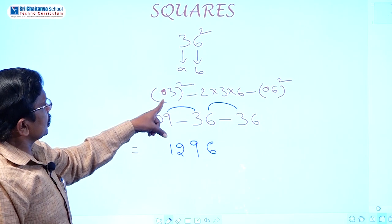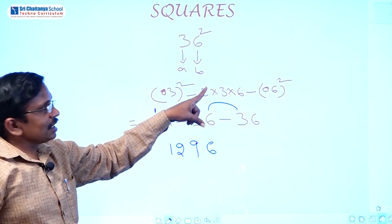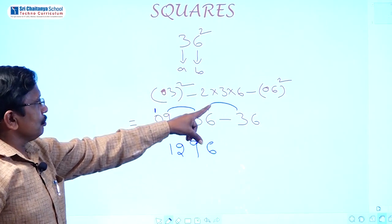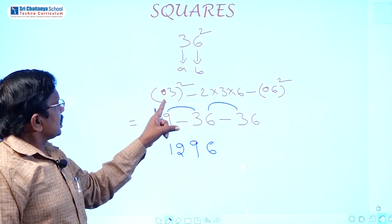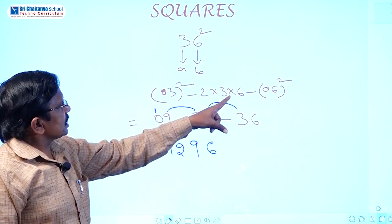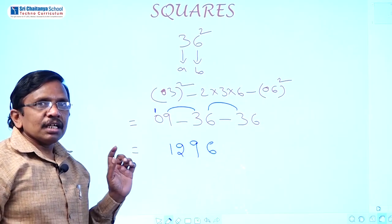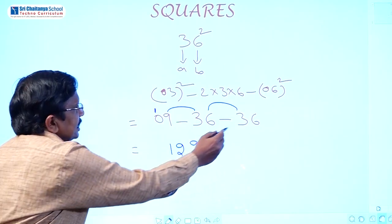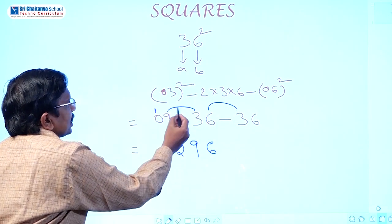So for 36 squared: A square means 3 squared equals 09. Then 2 into A means 3 into B means 6, giving 2 into 3 into 6 equals 36. B square means 6 squared equals 36. After balancing: 6 as it is, 3 plus 6 equals 9, 3 plus 9 equals 12.